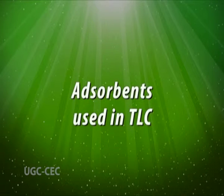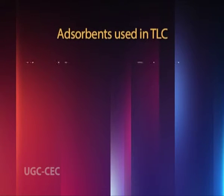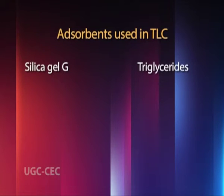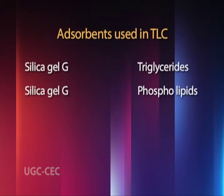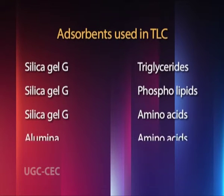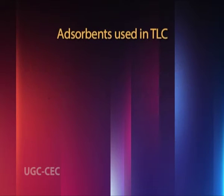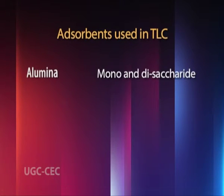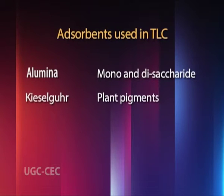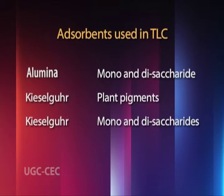Take care that the plate is not kept in an open environment for too long, otherwise silica gel may absorb moisture from the atmosphere. Silica gel G is used for separation of triglycerides, phospholipids, amino acids, and plant pigments, as well as mono- and disaccharides. Alumina is used for separation of amino acids and disaccharides.